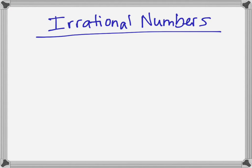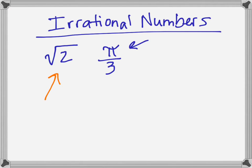We've talked about rational numbers, so let's go ahead and talk about irrational numbers. We know that a rational number is any number that can be written as a fraction of integers. So an irrational number would be a number that cannot be written in that way — numbers that can't be written as fractions. Some common ones are square roots, like square root of 2. We also have numbers like pi over 3, which may look like a fraction but it's not a fraction of integers because pi is not an integer. In this video we will focus on irrational numbers which are square roots, although there are other types of irrational numbers.